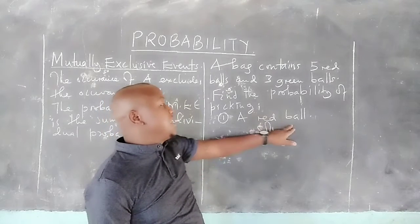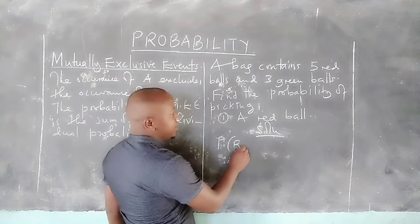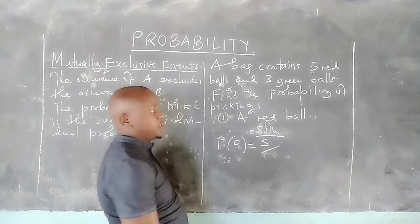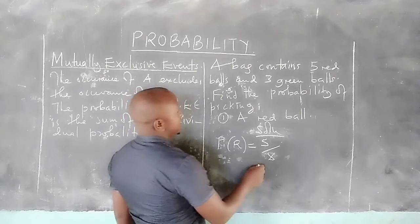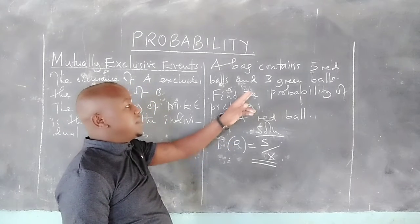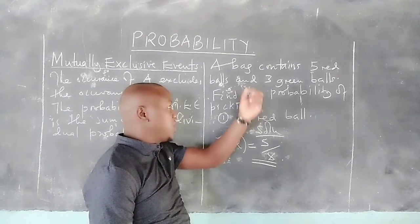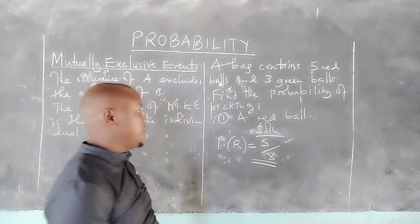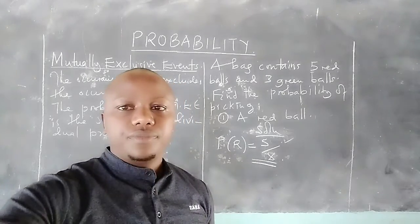If we pick a red ball, we cannot pick a green one. Therefore, the probability that the ball is going to be red is 5 out of a total of 8 balls. The preferred outcomes are 5 red balls out of 8 total, so the probability of picking a red ball is 5 out of 8.